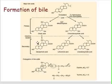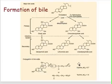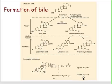After this, it undergoes conjugation of bile acid. It's combined either with glycine or taurine to become your conjugated bile acids.